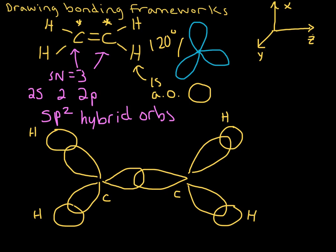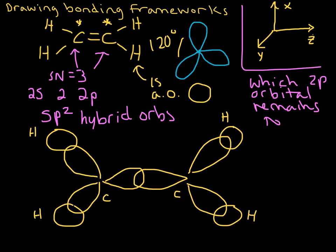Now there's a little wrinkle in here that we haven't discussed yet because I put this coordinate system up at the top. And so the first thing we're going to do before we draw the pi framework, we're going to figure out which p orbital is left over. So which 2p orbital remains unhybridized.